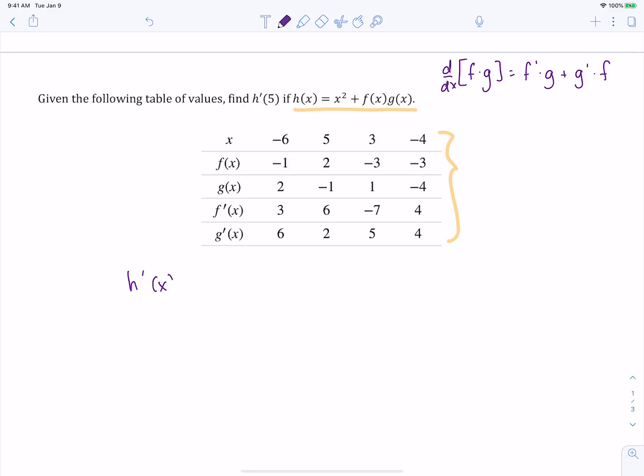So the derivative of h is going to be 2x, the derivative of that x², just like it always is. Plus we're going to have the derivative of our second part here. Our derivative of our two functions that are being multiplied. So we're going to have f'(x) times g(x). So again, derivative of f times g plus the derivative of g times f.